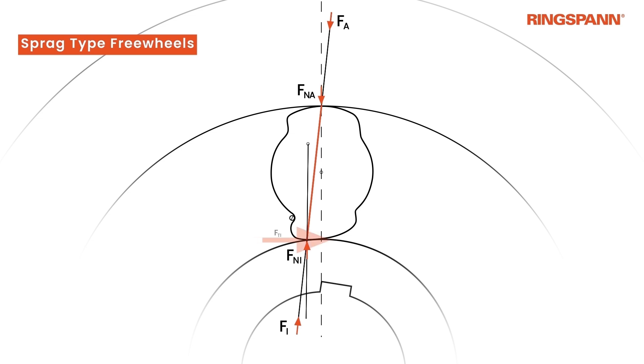These forces are equal in magnitude and can be divided into the normal forces Fni and Fna, as well as the tangential forces Fti and Fta. The angles between the normal forces Fni and Fna and the line of influence are called clamping angles Epsilon I and Epsilon A.